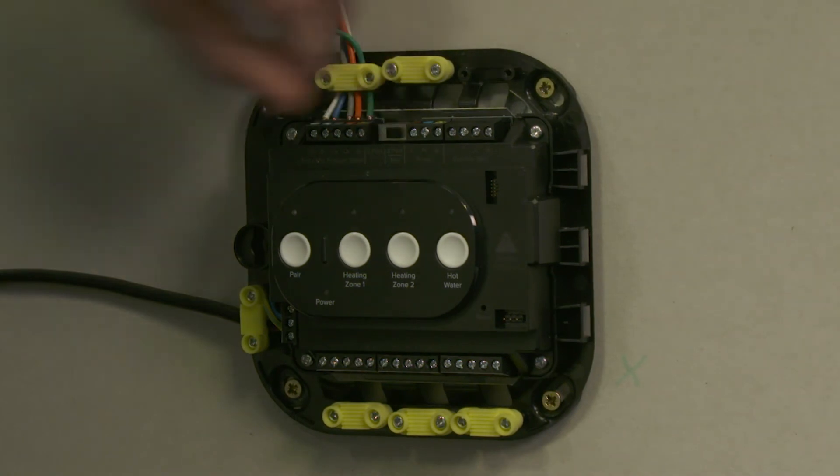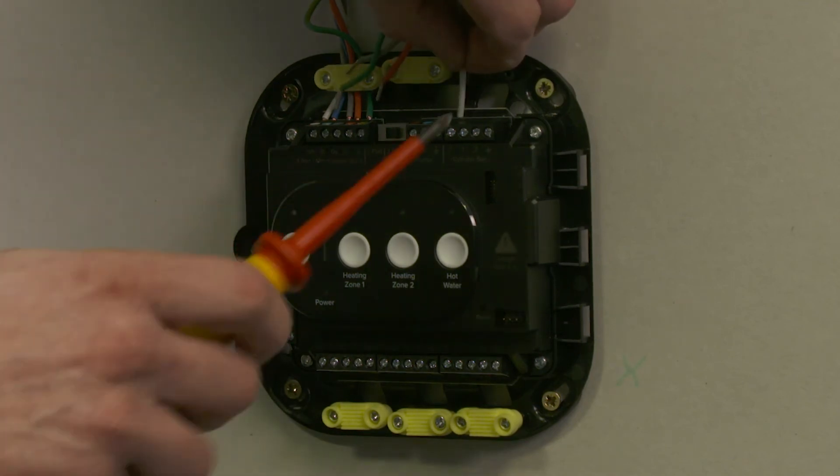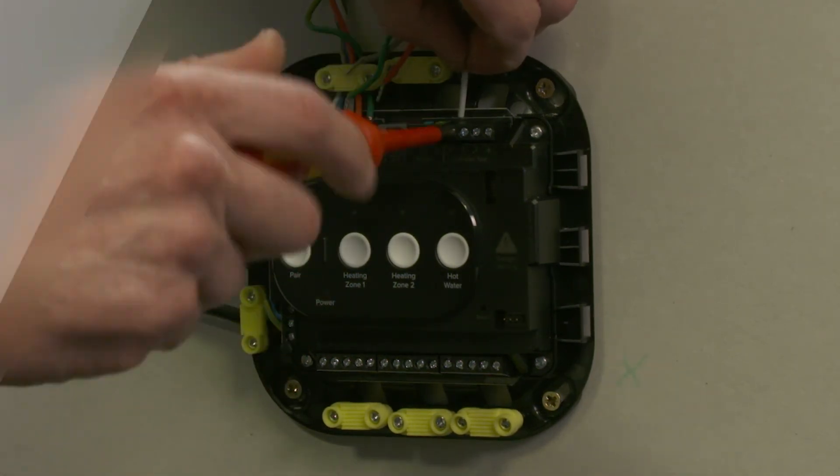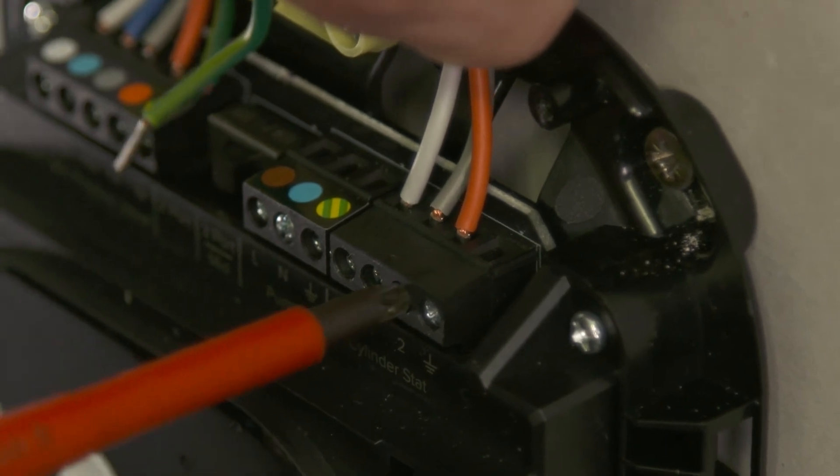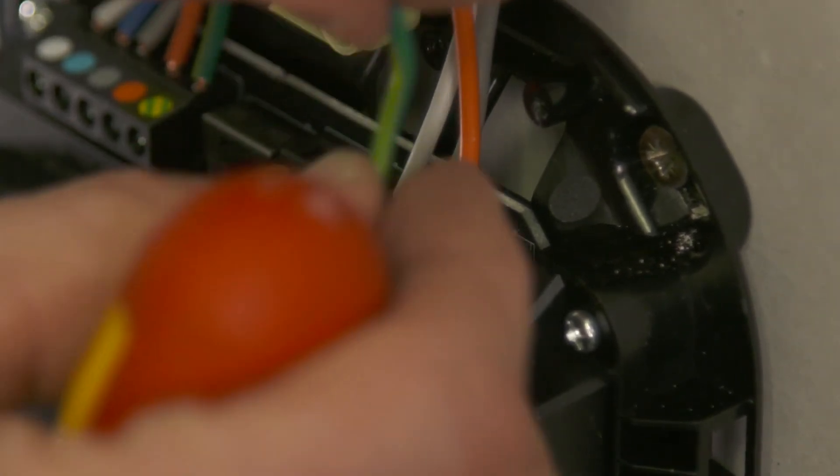Ensure the selector switch is set to the three port position. Wire in the common, one and two connections from the cylinder thermostat ensuring the wiring is correctly secured. An earth terminal is available should this be required.